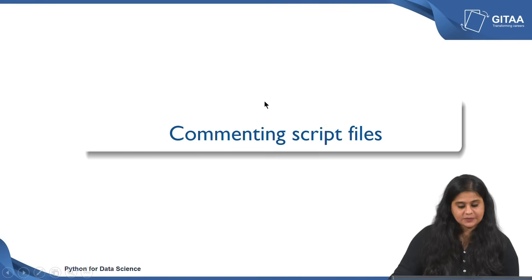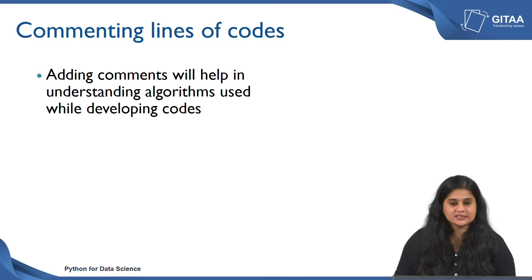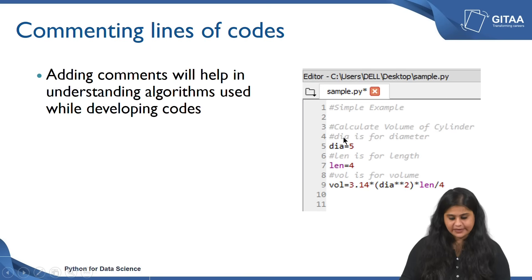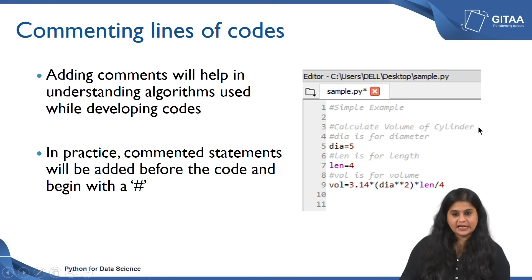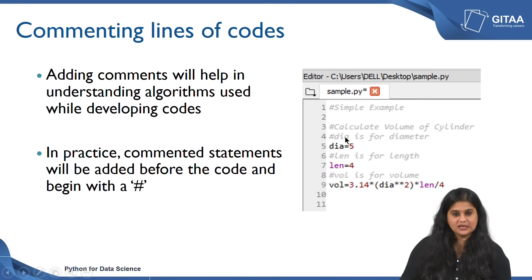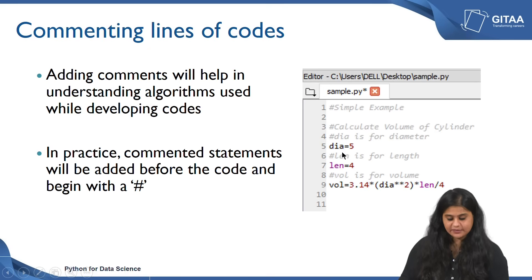Now let us move on to commenting script files. Adding a comment will aid in the understanding of algorithms used to develop a code. On the right you can see a snapshot — a trivial example that describes how the volume of a cylinder is calculated. To comment any line you basically begin with a hash. Here I have described the title of the task — calculating the volume of cylinder. Apart from describing the task, you can also define what each variable means: dia is diameter, LEN is length, and POL is volume.